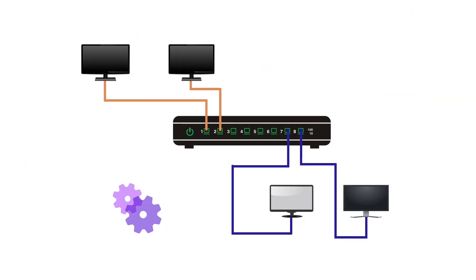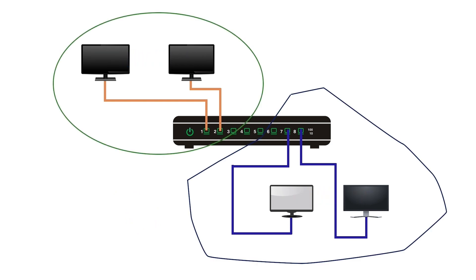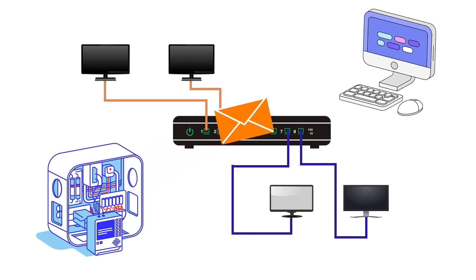A VLAN is a switch feature that creates a group of devices sharing broadcast messages in the local network. A broadcast message generated in one VLAN does not reach another VLAN. As we know, a DHCP server and clients use broadcast messages to communicate.